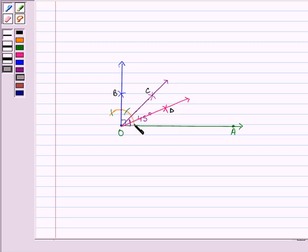What we did was, we took this point as the center, drawn an arc, then this point as the center, drawn another arc intersecting at point D and joined OD.